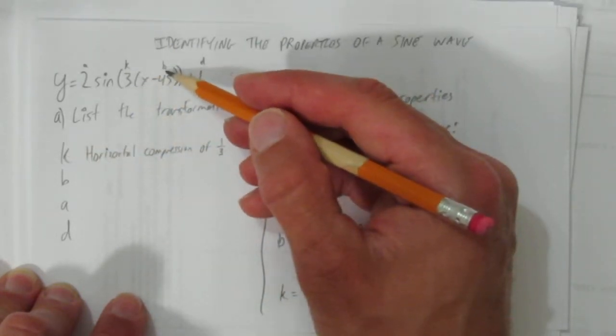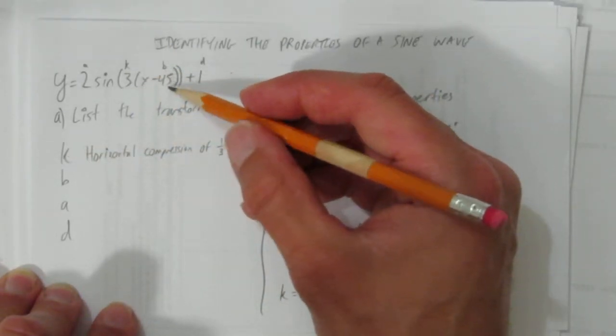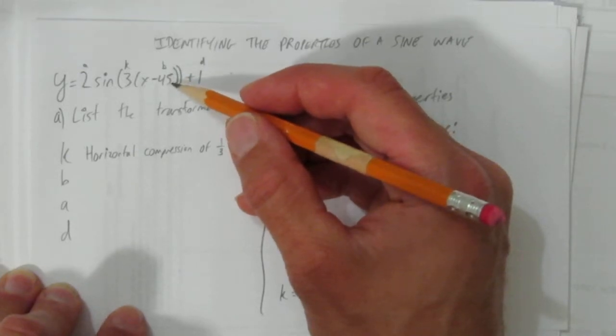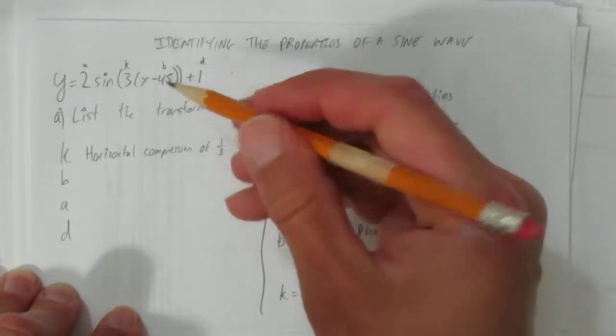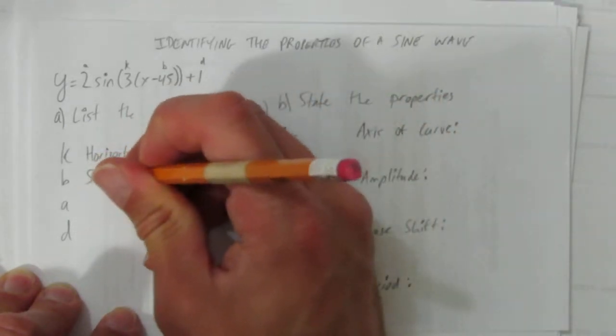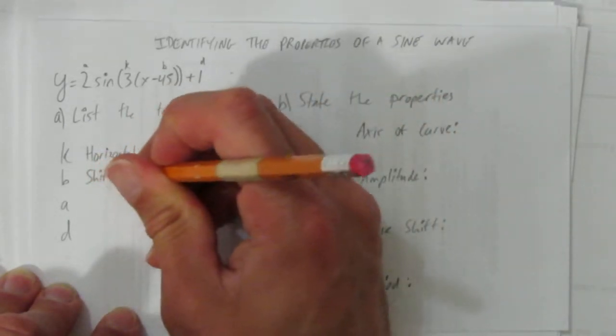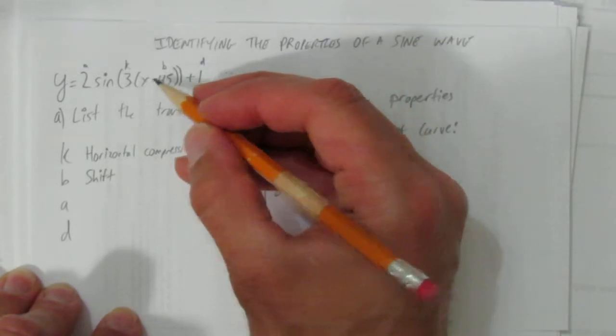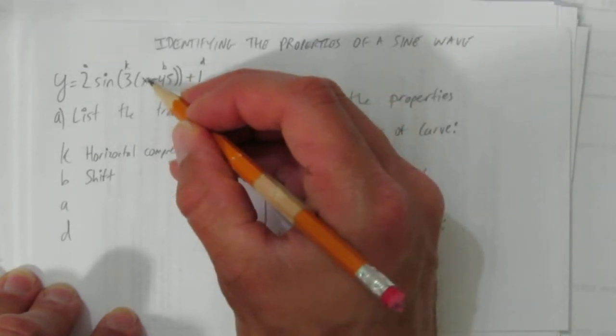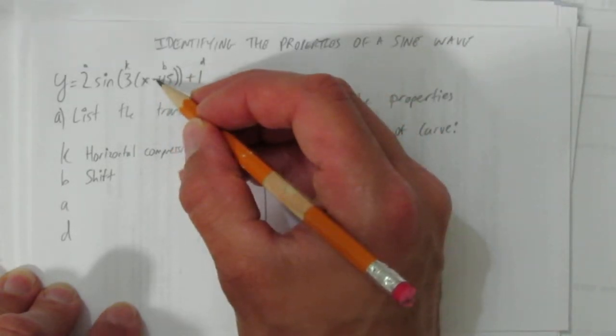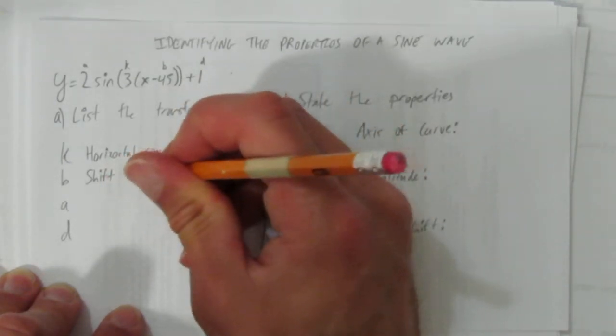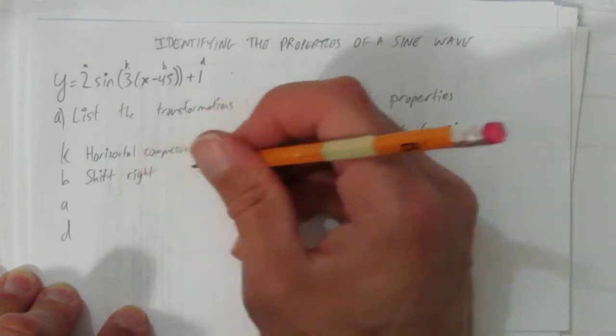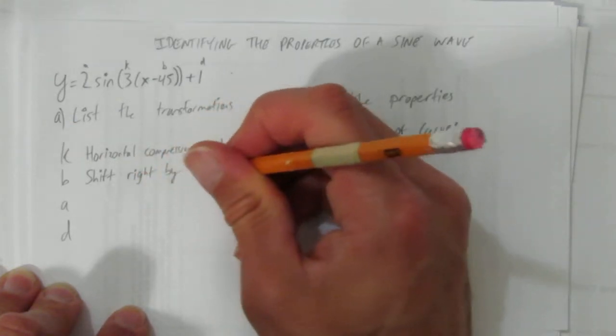The next one's the b value. The b value is also going to be horizontal. But it's a shift or a translation. You could even say move. So what type is it? Shift. What's the direction? It's negative, but it's an x thing. Remember this x means do the opposite. So since it's negative, we go the other way. Positive. Which on the x axis is to the right. So shift right by how much? 45.